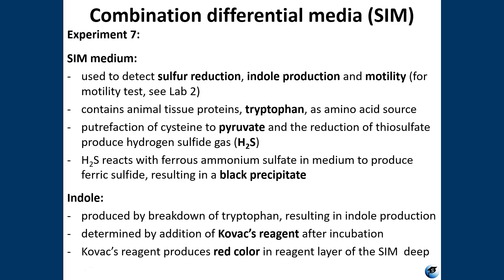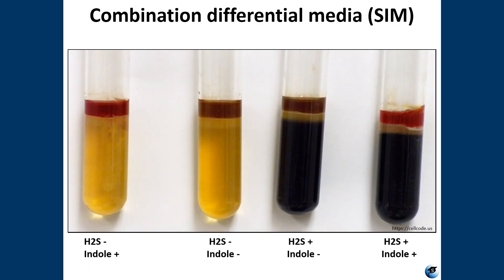Indole is the product we can observe. The hydrolysis of tryptophan can be detected by adding Kovac's reagent. After you incubate the SIM media, add Kovac's reagent, which contains dimethylaminobenzaldehyde (DMABA) and hydrochloric acid dissolved in amyl alcohol. When you add a few drops of Kovac's to the top of the tube, the DMABA reacts with any indole present and produces a red layer on the top of the tube.